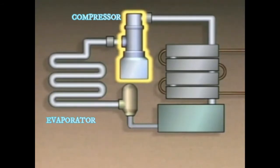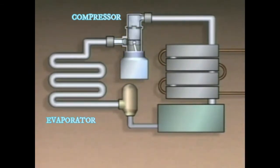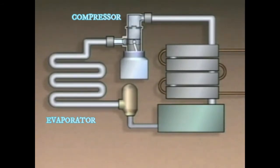A compressor is used to add energy to the refrigerant so that it can move through the cycle. The compressor receives the refrigerant vapor from the evaporator. Energy is added by squeezing or compressing the vapor into a relatively small space, which increases the vapor's pressure and temperature.